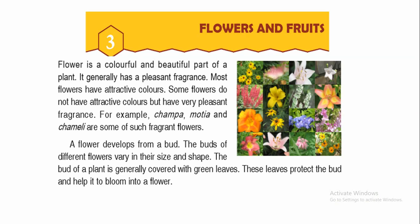A flower develops from a bud. The buds of different flowers vary in their size and shape. The bud of a plant is generally covered with green leaves, and these leaves protect the bud and help it to bloom into a flower.